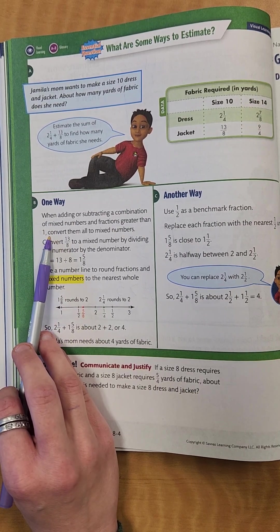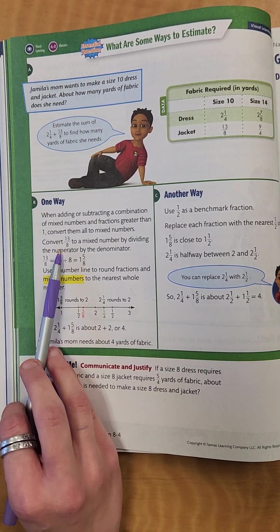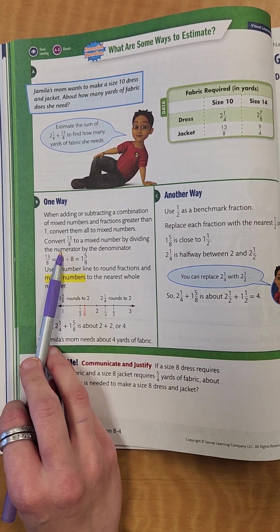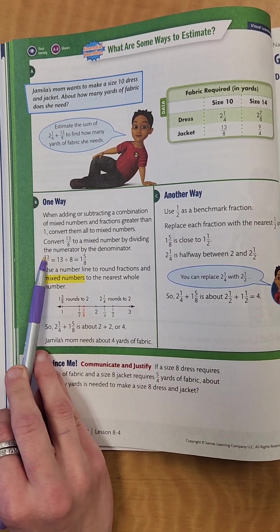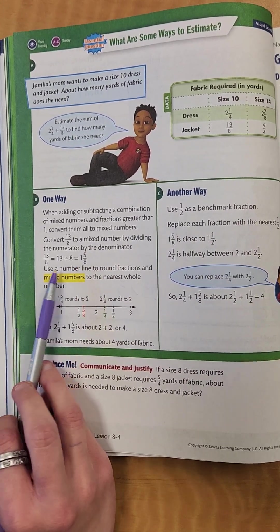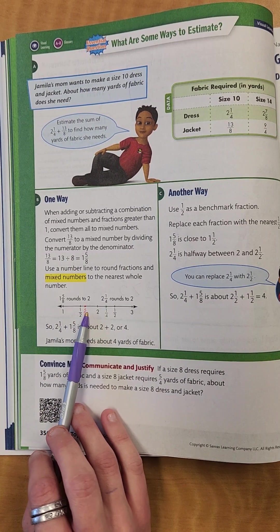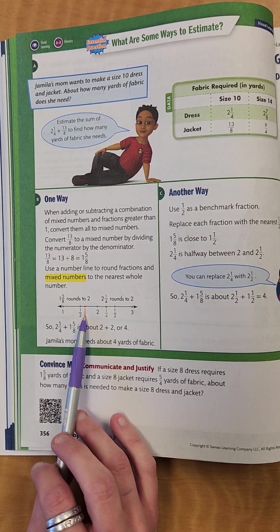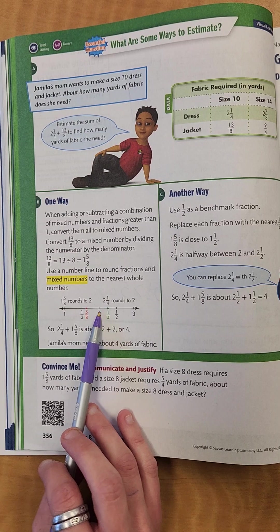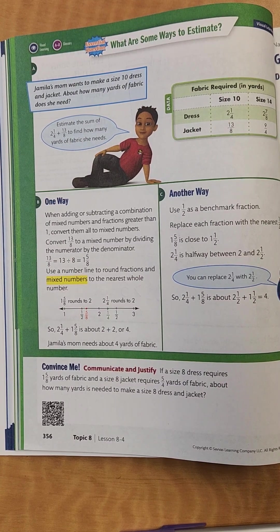So it says one way you can do that is when adding or subtracting a combination of mixed numbers and fractions greater than one, convert them into mixed numbers. That's going to be the easiest way is just making them into mixed numbers and then adding them. So we would convert 13 eighths to a mixed number by dividing the numerator by the denominator. So that one you're saying, how many times will 8 go into 13? It'll go into it one time with 5 left over. So that's how we would get our 1 and 5 eighths. Now, use a number line to round the fraction and mixed number to the nearest whole number. So that's where they're putting 5 eighths right here. So that would round to 2. So 1 and 5 eighths would round to 2. And then 2 and one fourth would also round to 2. So if we added them, 2 plus 2 would be 4. So she would need about 4 yards of fabric.